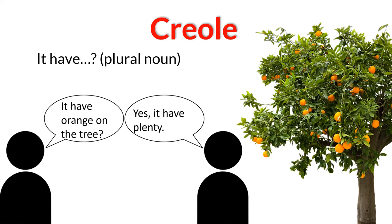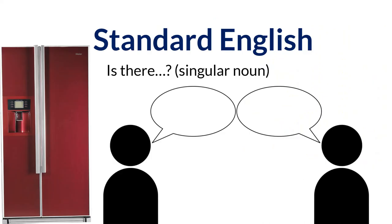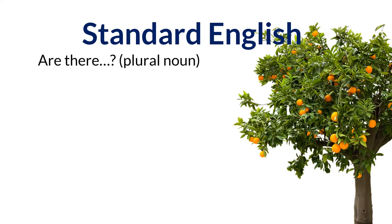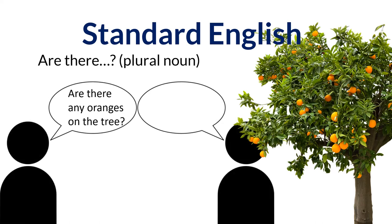Comment below if you want to see a video on forming the plural in Trinidad Creole. Now in Standard English, "there is" becomes "is there" before adding the singular noun. So Brandon might ask, "is there any food in the fridge?" and Maria might reply, "yes, there's plenty." When asking about the existence of multiple things, Brandon might say, "are there oranges on the tree?" and Marie might reply, "yes, there are many."